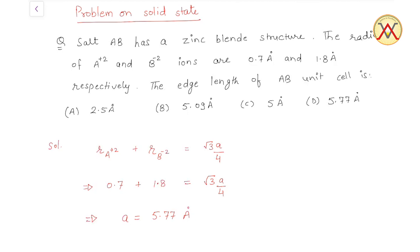The edge length of AB unit cell is asked, and four options are given. So for zinc blende structure, if we talk about ZnS structure, the negative ion B²⁻ forms CCP.